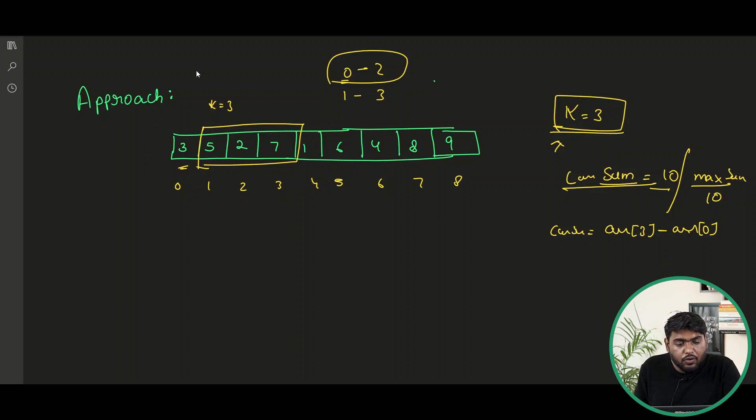Now when we are going to do this again we are going to move it here. Let me just calculate this as well. It was 10 already. We added 7, it became 17. We subtracted 3, it became 14. So our current sum after this is 14. Maximum will be updated to 14 as well. Now again window will move here.